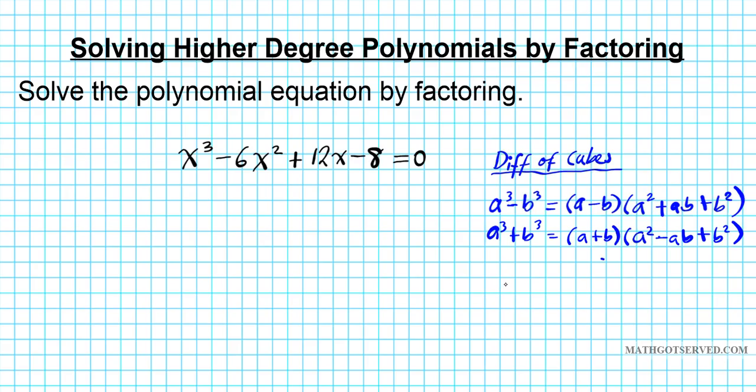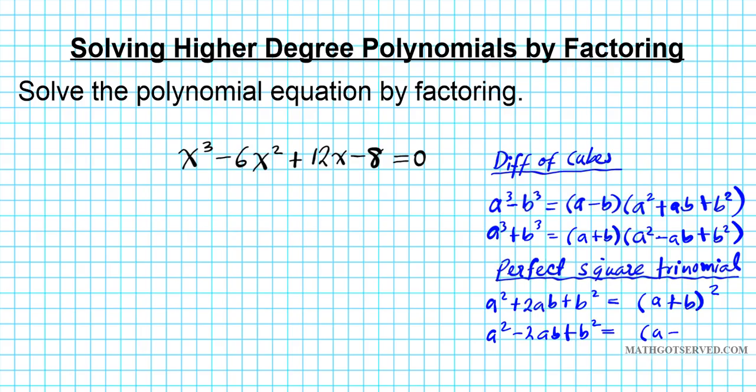So difference of cubes and then also you have to remember the factorization trick for perfect square trinomials. There is a shortcut for factoring perfect square trinomials. So let's say we have a perfect square trinomial a² + 2ab + b². If you root the first and the last and bring down the middle sign you have the factored state of this polynomial which is (a + b)². And then if you have a² - 2ab + b² that factors into (a - b)². Let's keep this in mind.